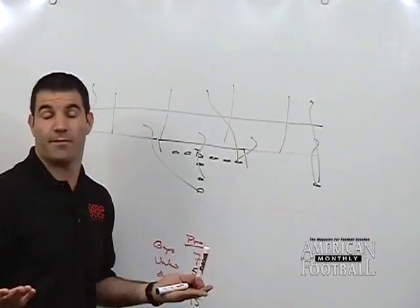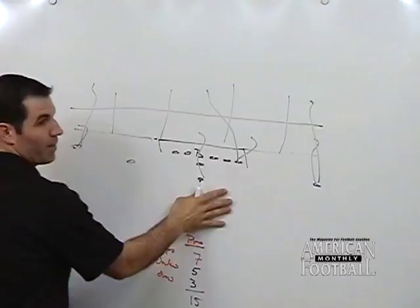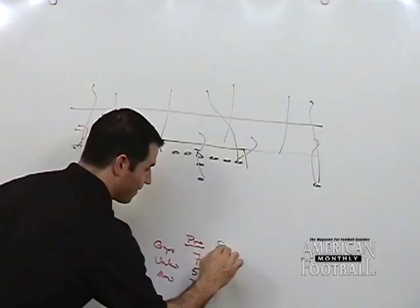Let's take that back out, and let's put them right there in the slot. So we went from a pro to a flank formation, or a pro balanced formation. Balanced, 11 personnel, whatever you might be in.